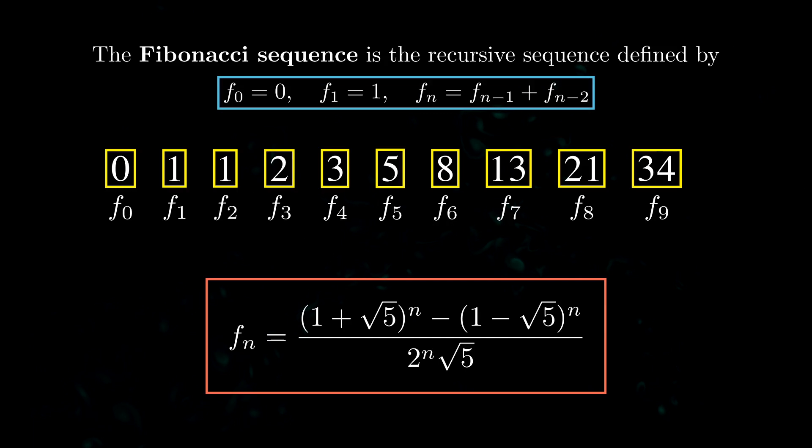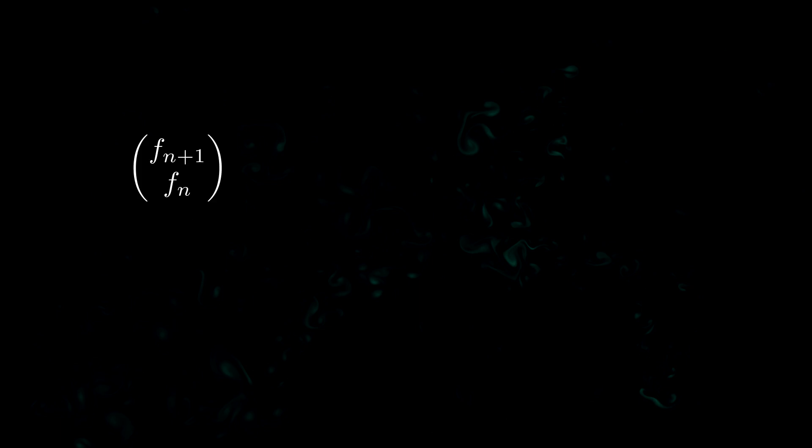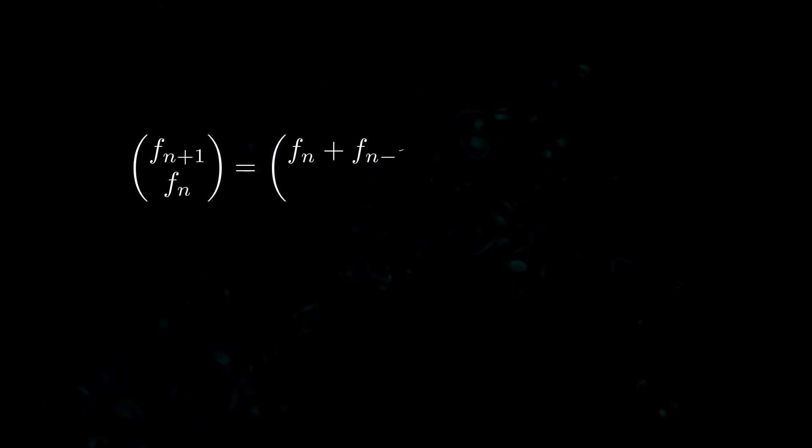So how does linear algebra which is all about matrices enter the picture here? Well we have to consider this vector here so we take the vector whose x coordinate is just the (n+1)th Fibonacci number and whose y coordinate is just the nth Fibonacci number. Then we can use the recursive formula to write this vector in a different way and in fact this vector is just equal to a matrix multiple of a similar kind of vector namely this one. So this is how linear algebra enters the picture it's got everything to do with this matrix here.